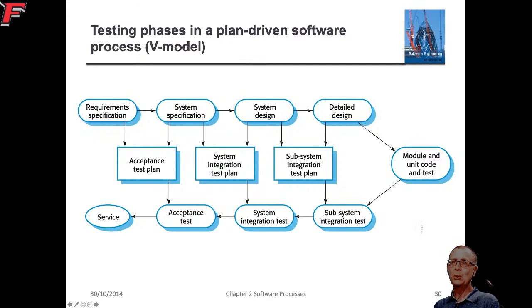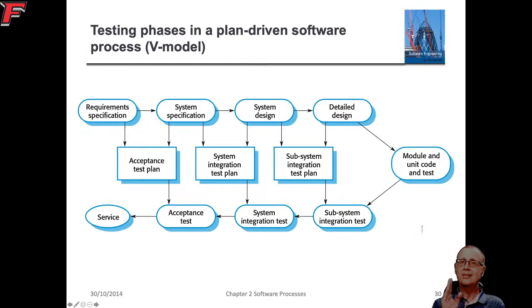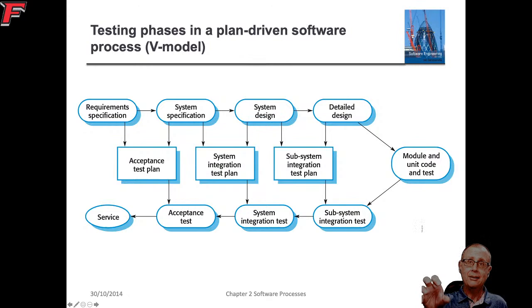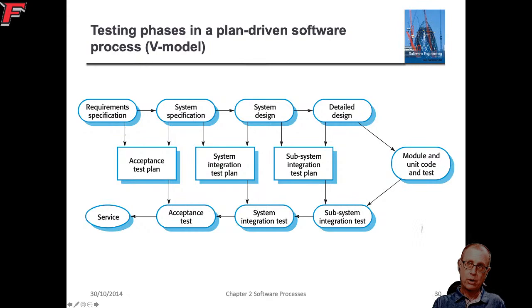Looking at testing across the plan-driven software process — the V-model — we go through requirement specification, system specification, system design, and detailed design. Then we get to module and unit test code, followed by subsystem integration, system integration test, and acceptance test. Once we've passed all acceptance tests we push it into service. Importantly, the acceptance test plan can be written as soon as you've finished the requirements and started the system specification — you don't have to wait until the end of design or implementation.